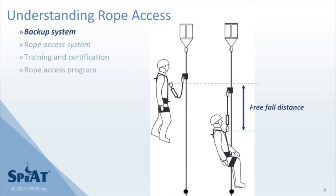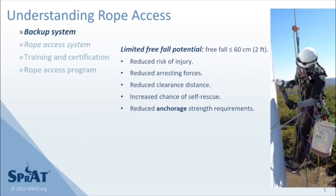This simple rhetorical exercise illustrates an important, obvious truth. When working at height, if faced with the potential to fall, a fall protection system should be selected and used to minimize potential freefall distance. The importance of this concept is emphasized by the term 'limited freefall potential,' which is defined as restricting possible freefall to no more than 60 centimeters or two feet. This term is integral in SPRAT's definition of rope access and in the backup system requirements and recommendations found in SPRAT's Safe Practices for Rope Access Work.